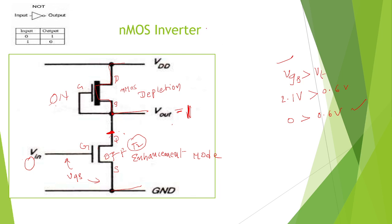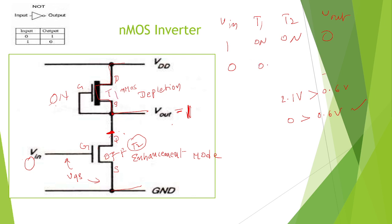Hence the output is binary 1. To summarize: when VIN is 1, T1 is ON and T2 is ON, hence the output is 0 because the path is totally grounded. When binary input 0 is given, T1 is always ON because source and gate are interconnected, but T2 is OFF due to insufficient VGS. Hence VDD flows towards the output side and the output is binary 1. This is how the inverter works.